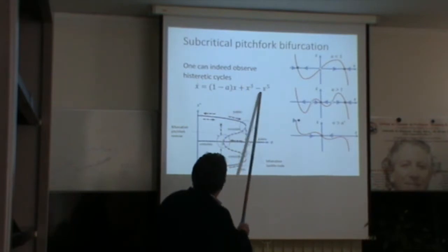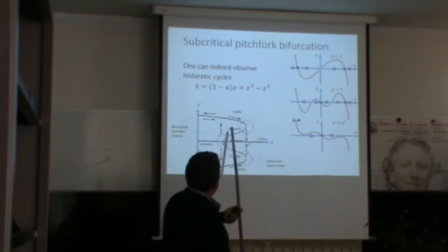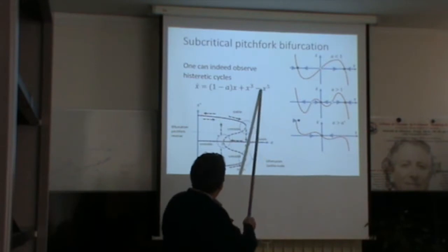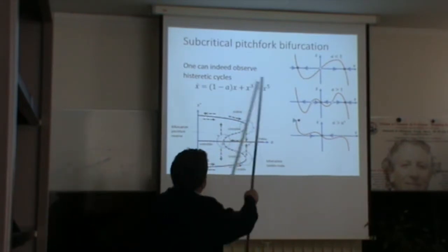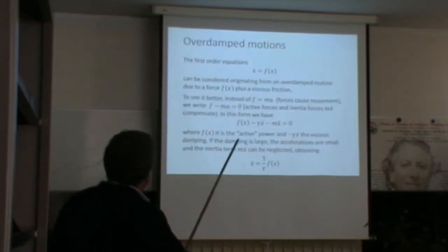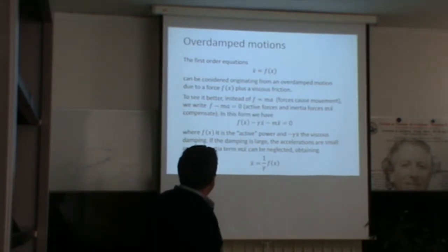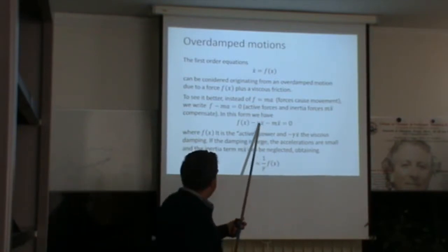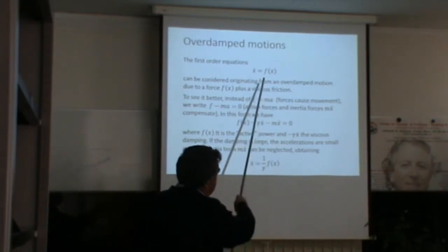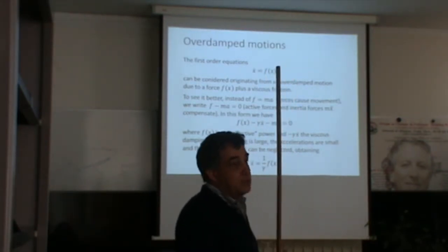Up to now we have studied first-order equations, which can be considered to arise from the Newton equation with a large damping term. With this one-dimensional system, you only expect exponential relaxation — the motion is essentially over-damped, like a ball falling in a very sticky fluid, with no oscillations. In order to have oscillations you need at least a two-dimensional system, i.e., at least a second-order equation, written as a system of two coupled first-order equations.